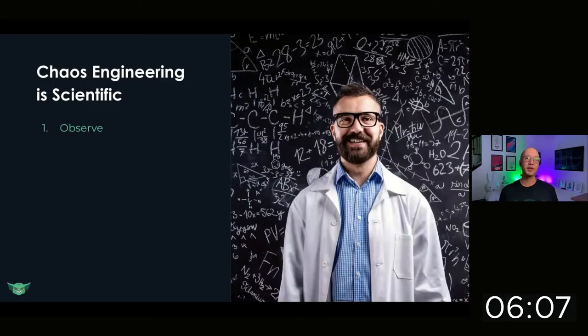Getting started with chaos engineering is easy. First, you observe your systems to establish a baseline for normal operations. What do things normally look like? Second, from that information you develop a hypothesis. How do you think your systems will respond to failure or stress? How do you expect this failure to manifest in your application? And then you inject that failure and you collect data.